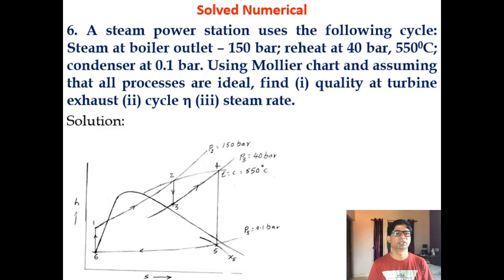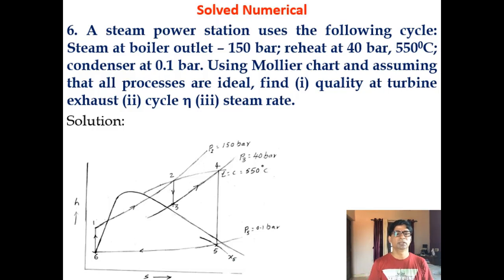Problem number 6. A steam power station uses the following cycle: steam at boiler outlet is 150 bar, reheat at 40 bar to 550 degree Celsius, condenser pressure is 0.1 bar. Using the Mollier chart and assuming all processes are ideal, find the quality at turbine exhaust, cycle efficiency, and the steam rate.